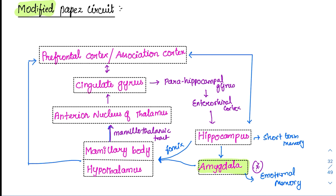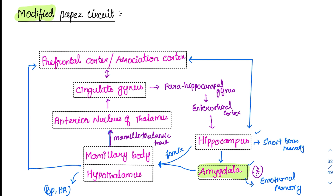From the amygdala it goes to the hypothalamus. Whenever any memory is there, not only the emotional aspect but also the peripheral aspect comes into play. Suppose you see a friend after a very long time — you get excited, your heart beats fast — these things cannot be done by the hippocampus and amygdala alone. For that, we need the autonomic system to be activated, which is done with the help of the hypothalamus. So the hypothalamus controls blood pressure, heart rate, and those functions.